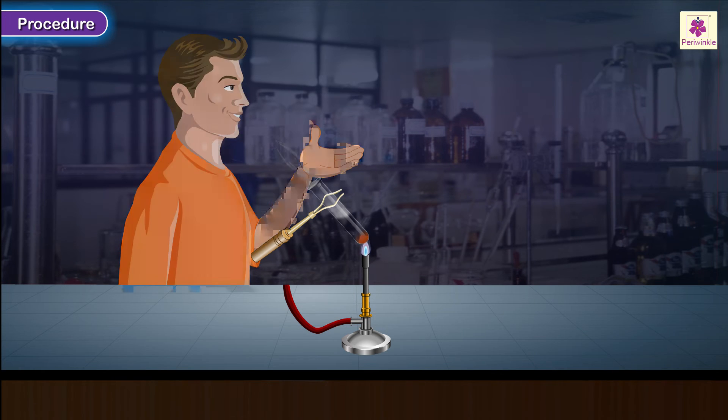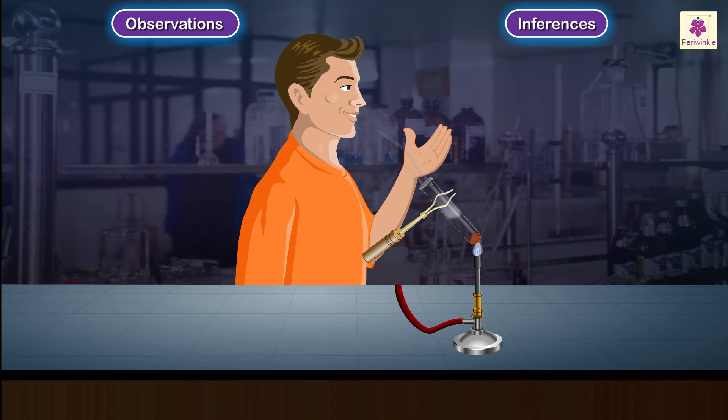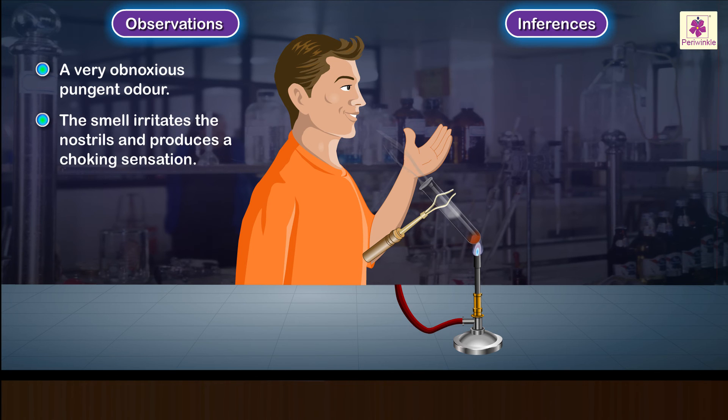Procedure: Cautiously smell a whiff of gases emerging from the test tube. Observations and inferences: A very obnoxious, pungent odor is observed. The smell irritates the nostrils and produces a choking sensation.